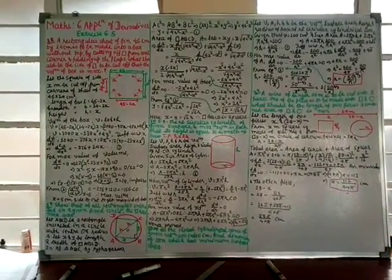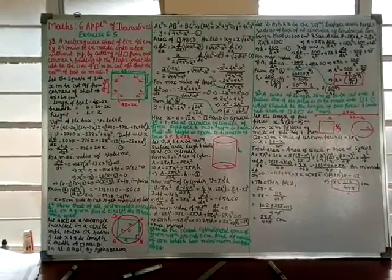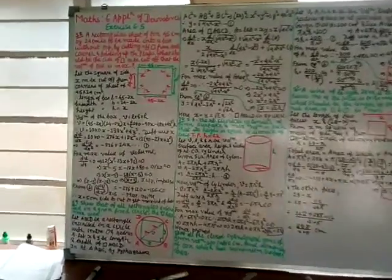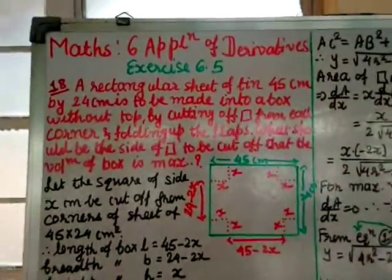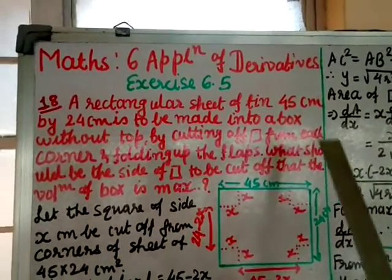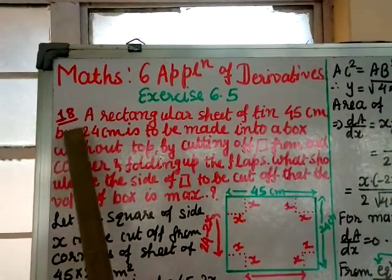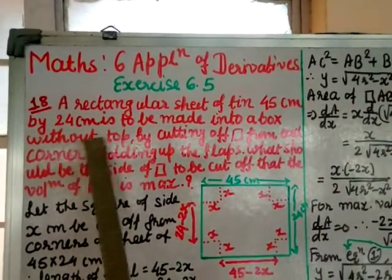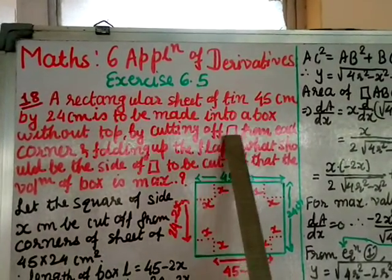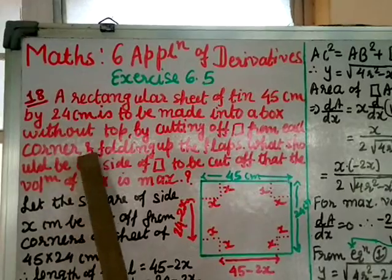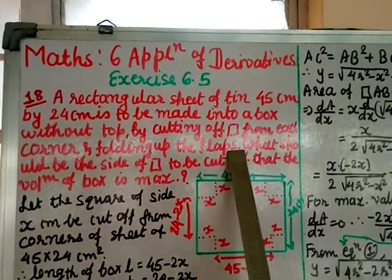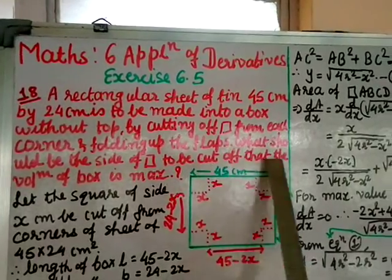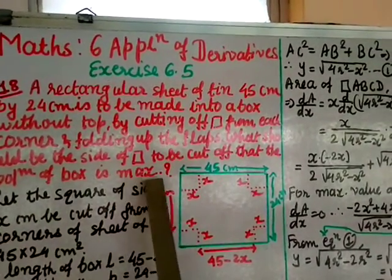Mathematics class 12, Chapter 6, Application of Derivatives, Exercise 6.5, Question number 18. A rectangular sheet of tin 45 cm by 24 cm is to be made into a box without a top by cutting off squares from each corner and folding up the flaps. What should be the size of the square to be cut off so that the volume of the box is maximum?